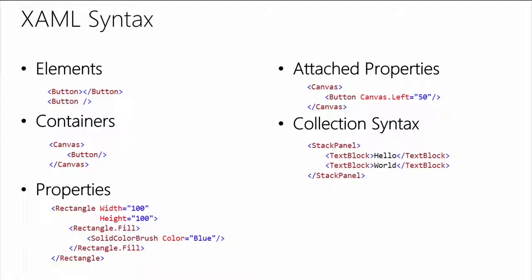Looking at this, you can see that Rectangle is a class with properties, one being Fill, and SolidColorBrush is a class with a Color property set to blue. XAML is an object instantiation language — we define objects and the properties they'll be set to once the XAML is parsed and executed. Something very unique to XAML is the ability to add a property to a class without extending it — attached properties. For example, Canvas.Left allows you to say where a button goes on a Canvas. Built-in controls have this, and you can build your own custom controls with it too.